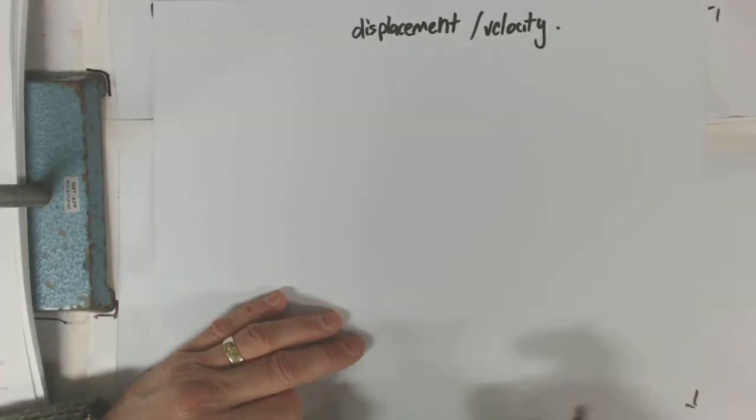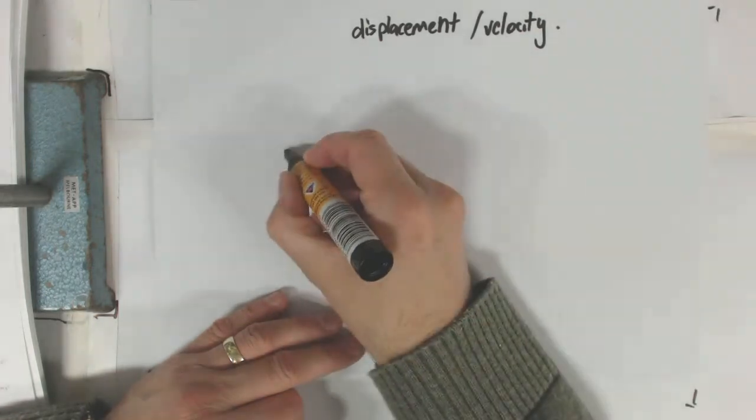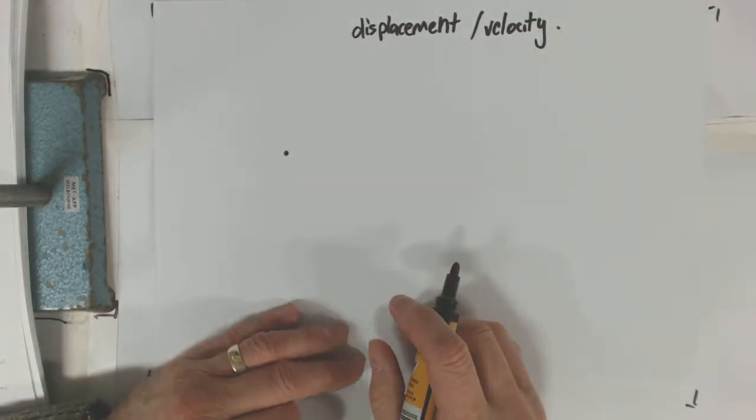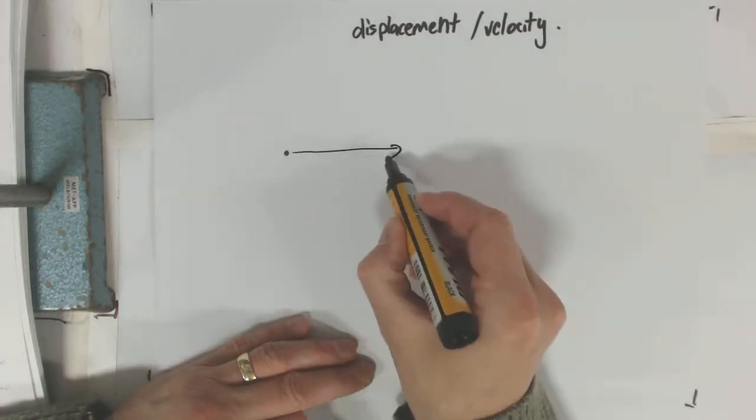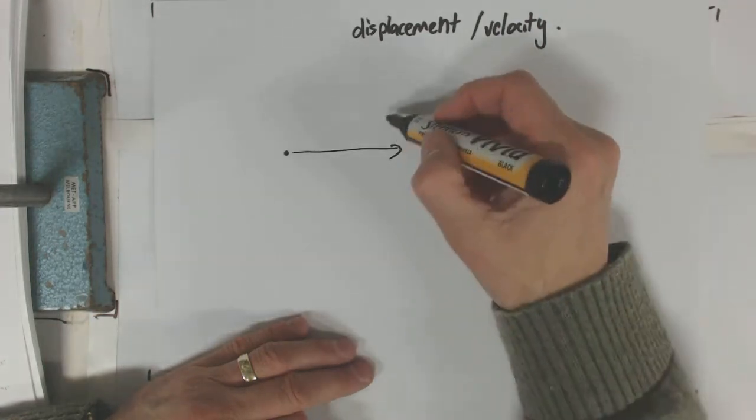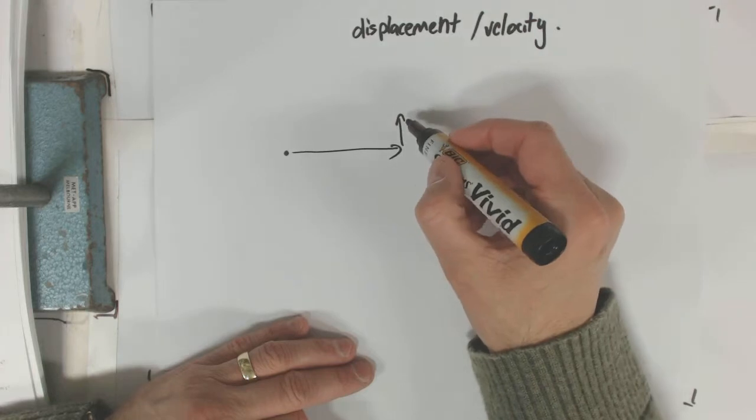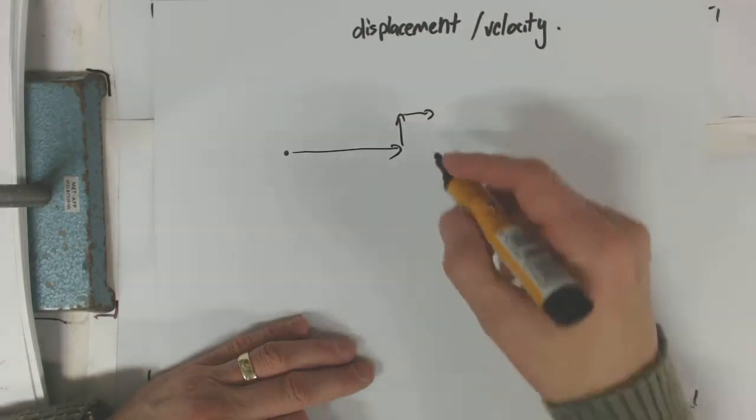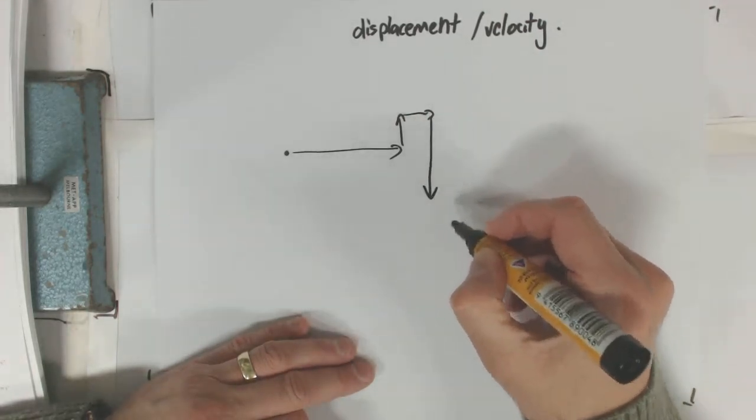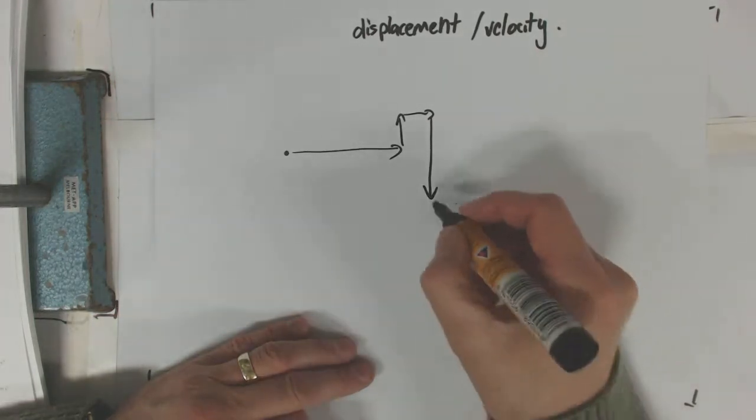Displacement was distance with a direction. So let's give you an example. You go off on a run. You run 5Ks east. You run 1K north. You then run another K east. You then run 4Ks south. And you stop.